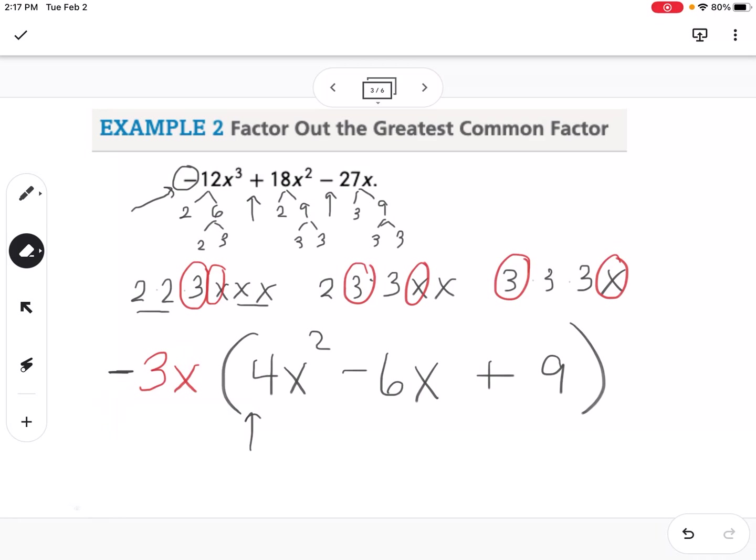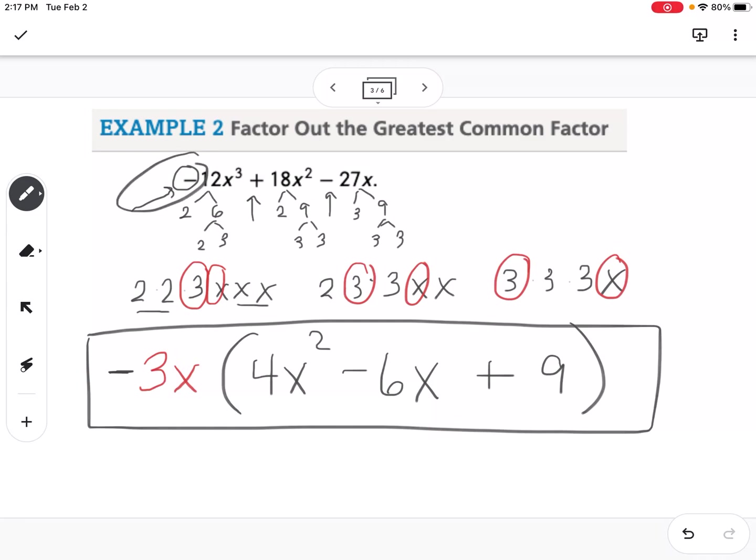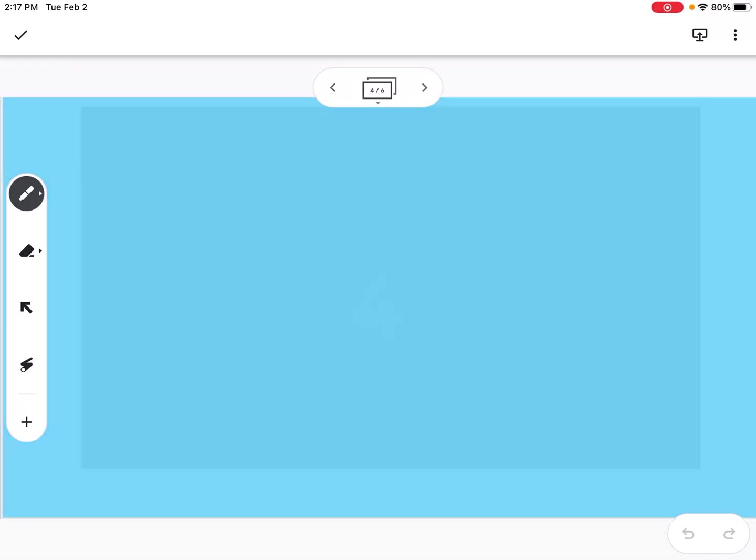So this is what you would get if you were asked to factor out the greatest common factor. And that helps us simplify what's inside the parentheses. If there is no negative out front, you don't have to do that change of sign like we did.